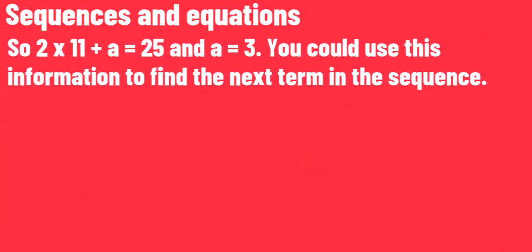So 2 times 11 plus a equals 25, and a equals 3. You can use this information to find the next term in the sequence.